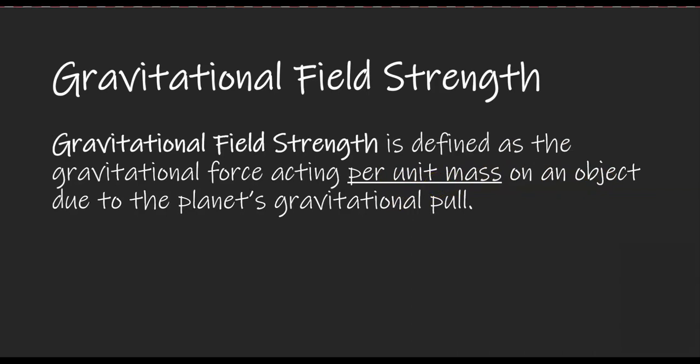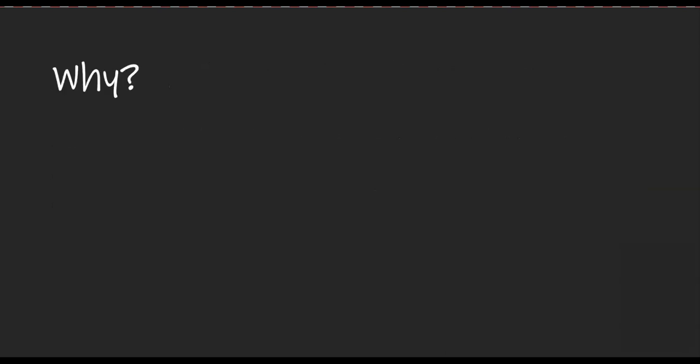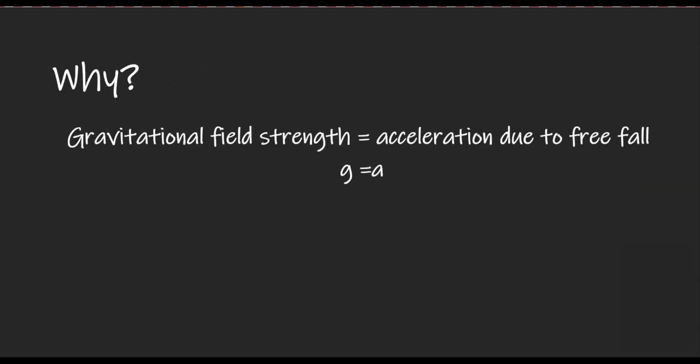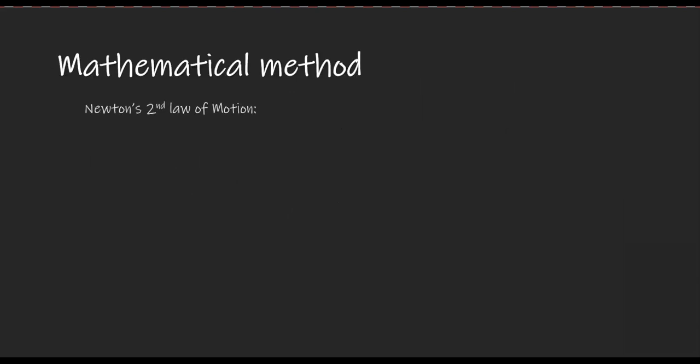Having defined gravitational field strength to be the force acting per unit mass, let's now find out why it is equal to the acceleration due to free fall. We have learned in dynamics that according to Newton's second law, the resultant force acting on an object is equal to its mass times its acceleration.